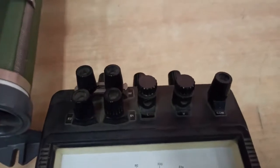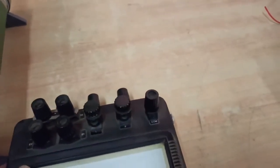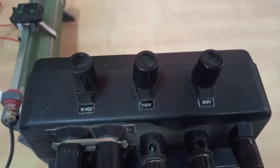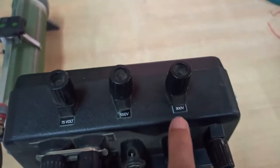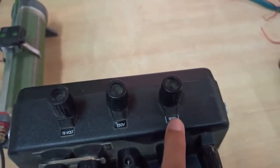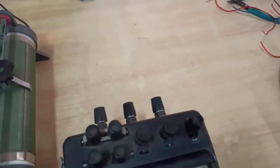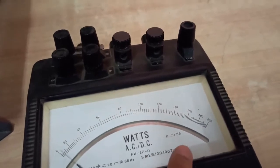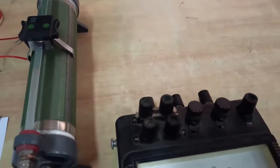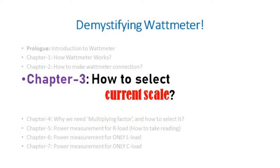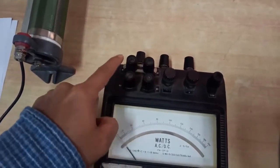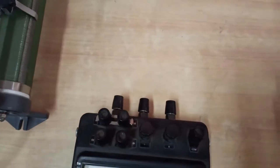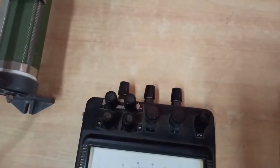For voltage measurement, we have three ranges available. Just as a voltmeter may have two or three ranges, the wattmeter also has three voltage ranges, and you select one based on your requirement. For current, we have two ranges: 2.5 A and 5 A, shown on the display. You select these by making proper connections at the terminals. Currently it is set for the 2.5 ampere scale.